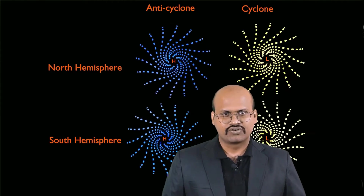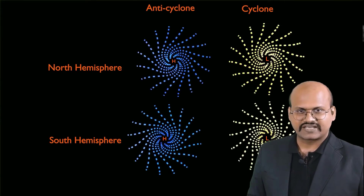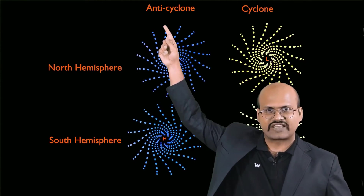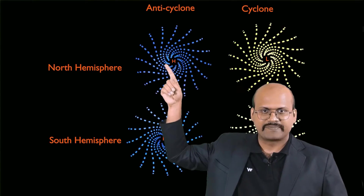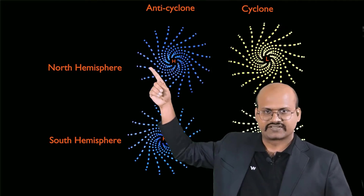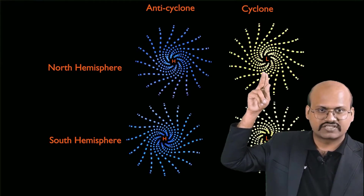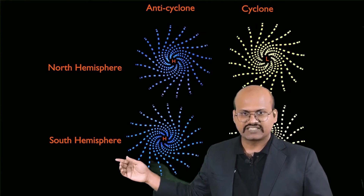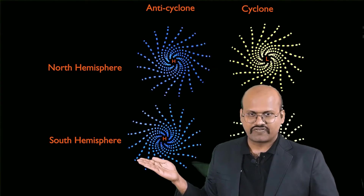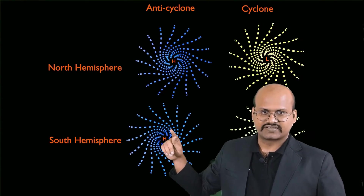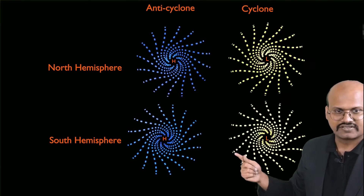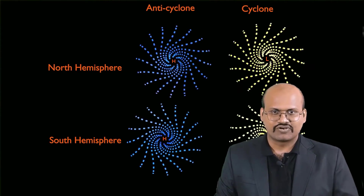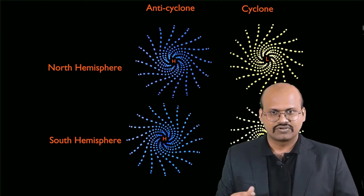Coriolis force changes the direction of motion of different systems in the northern and southern hemispheres. In the northern hemisphere, anti-cyclones where air moves outward from a high pressure zone move in a clockwise direction, while cyclones where air moves toward a low pressure area move in an anticlockwise direction. In the southern hemisphere it is reversed: anti-cyclones move anticlockwise while cyclones move clockwise. Because Coriolis force acts in opposite directions in each hemisphere, cyclones and anti-cyclones rotate in opposite directions in each hemisphere.